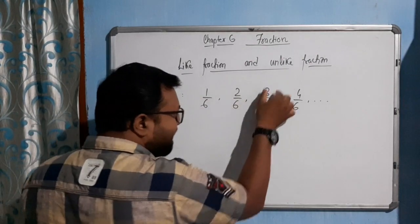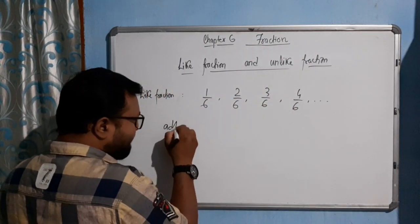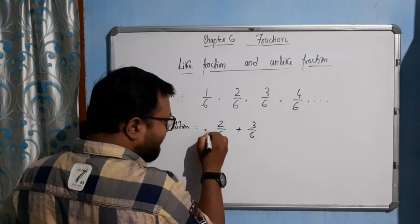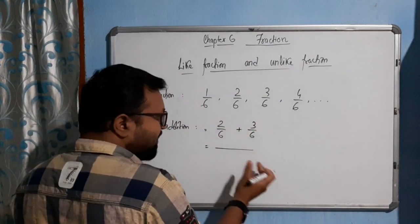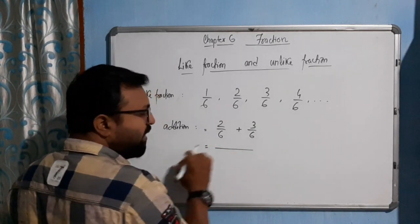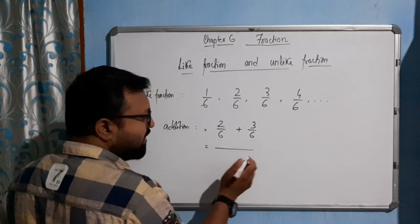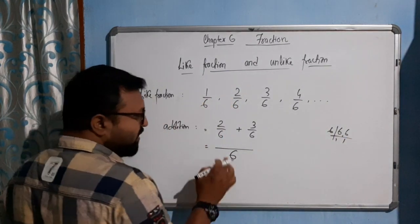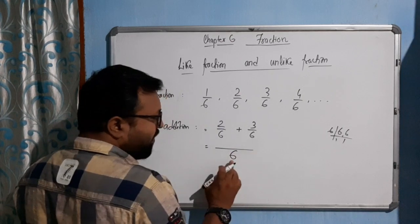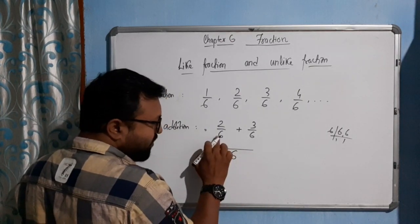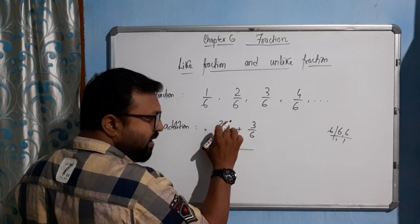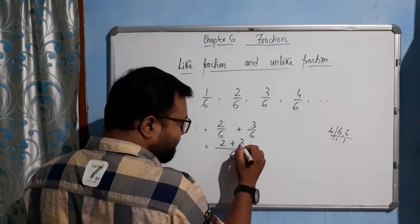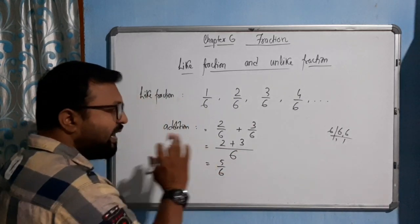For example, let's add 2/6 and 3/6. We write 2/6 + 3/6. As I told you, whenever we add two fractions we take the LCM of the denominators. Here both denominators are 6, so the LCM is also 6. There is no change in the denominator, so there is no change in the numerator either. We simply write 2 + 3 = 5, giving us 5/6.